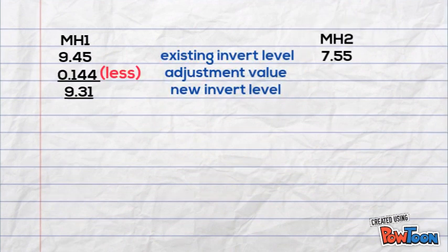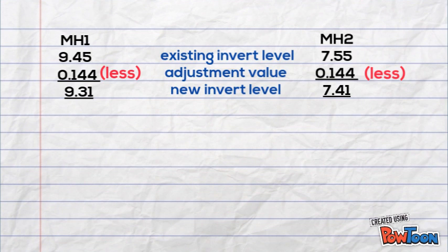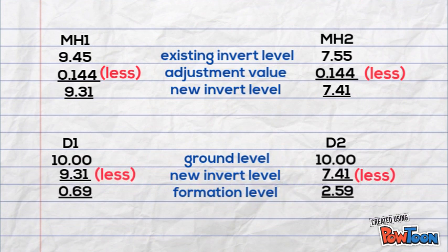Existing invert level will be deducted with adjustment value to get new invert level. After that, ground level will be deducted with new invert level to get new formation level.